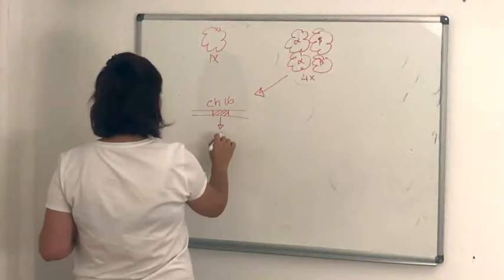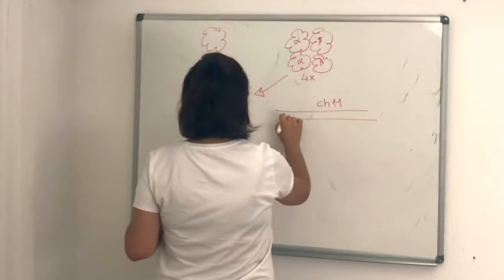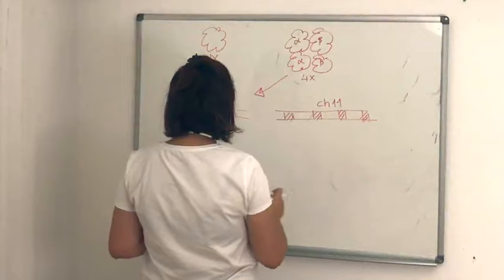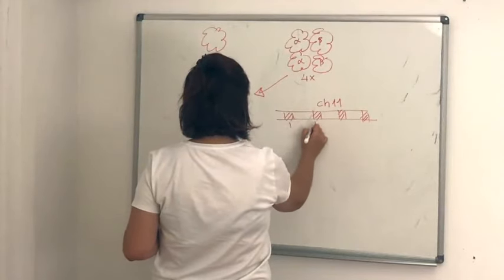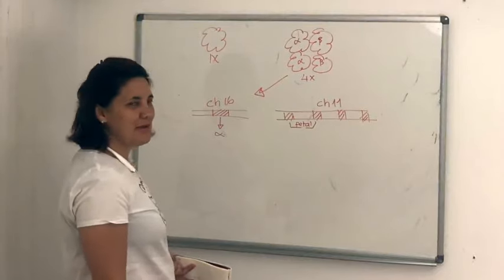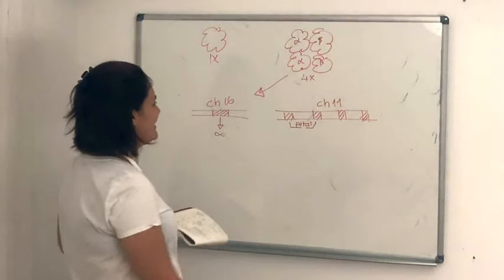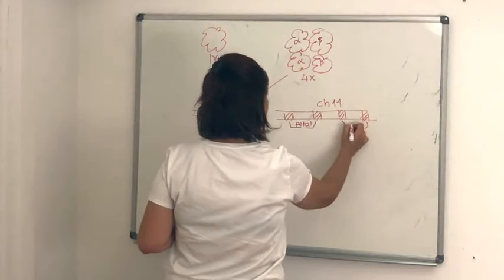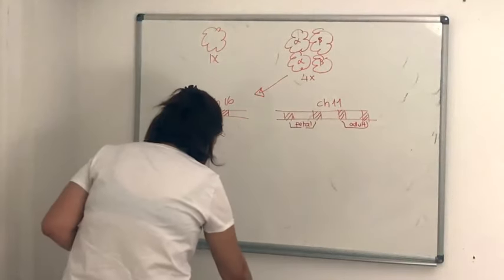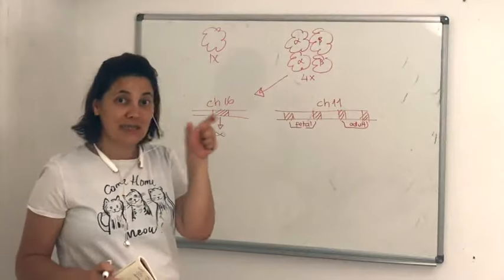Bu tek zincirli halini kodlayan genin duplikasyon geçirdiği düşünülüyor. Çünkü şu anda insan genomundaki bunu kodlayan genin dizilimi şu şekilde: kromozom 16'da bir bölge var, bu bölge alfa-1 kodluyor. Kromozom 11'de ise iki, üç, dört tane bölge var. Bunlardan şu ikisi fetal; beta globin yani bebek, yeni doğmuşlar ve henüz doğmamış olan bebekler için beta globin'i üretiyor. Burası da erişkindeki beta globin'i üretiyor.